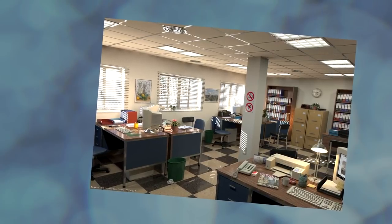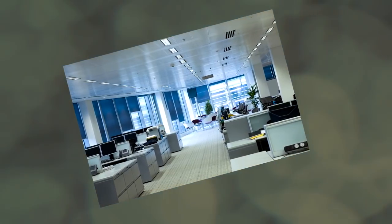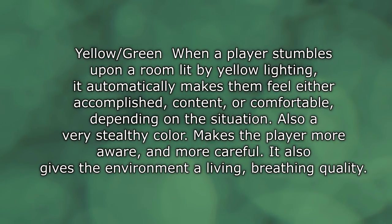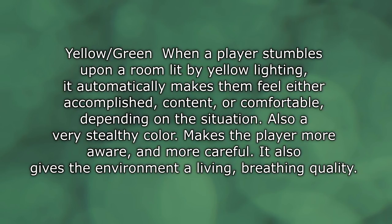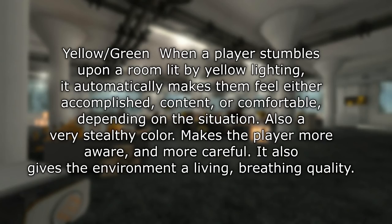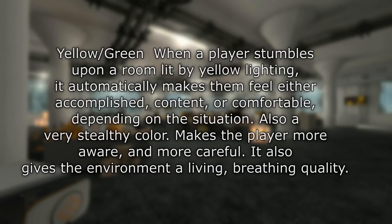Even as you look around now, you'll probably notice that the light in your room is a yellowish light, or your computer monitors cast blue light on the wall behind you. You're going to use colors a lot to increase the immersion of your map and give the player a set feeling. Yellow and greenish lights make the player feel accomplished or comfortable, depending on the situation. It's a stealthy color that makes the player more aware of their surroundings, and gives them a feeling the room could be alive — almost like a greenhouse or forest type area.